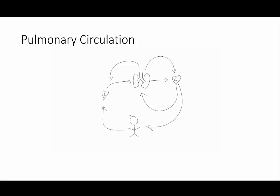One key difference between these two separate but related sources of blood flow is that while the pulmonary system is under low pressure, the bronchial system, because it comes off of the aorta, is under high pressure. This has important implications for different disease processes which may affect the resistance of pulmonary blood flow.